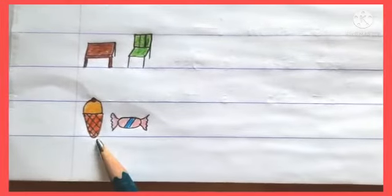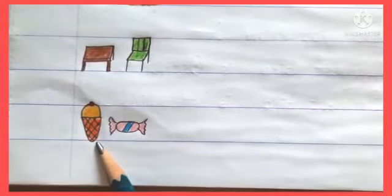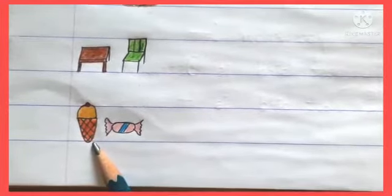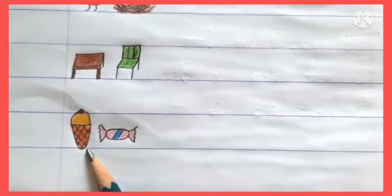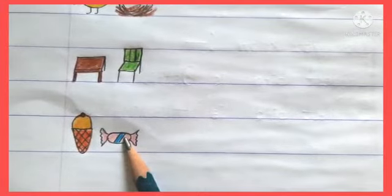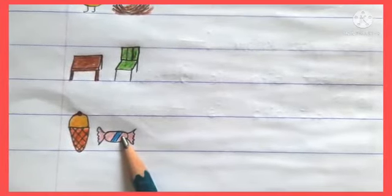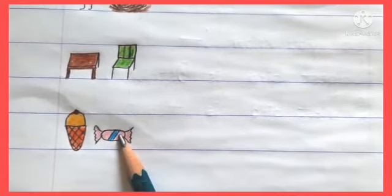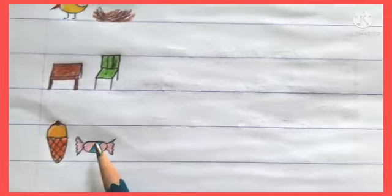Here is ice cream and toffee. Ice cream begins with the letter I — I is a vowel, so we have to say an ice cream. Toffee — T for toffee, and T is a consonant, so we say a toffee. An ice cream and a toffee.